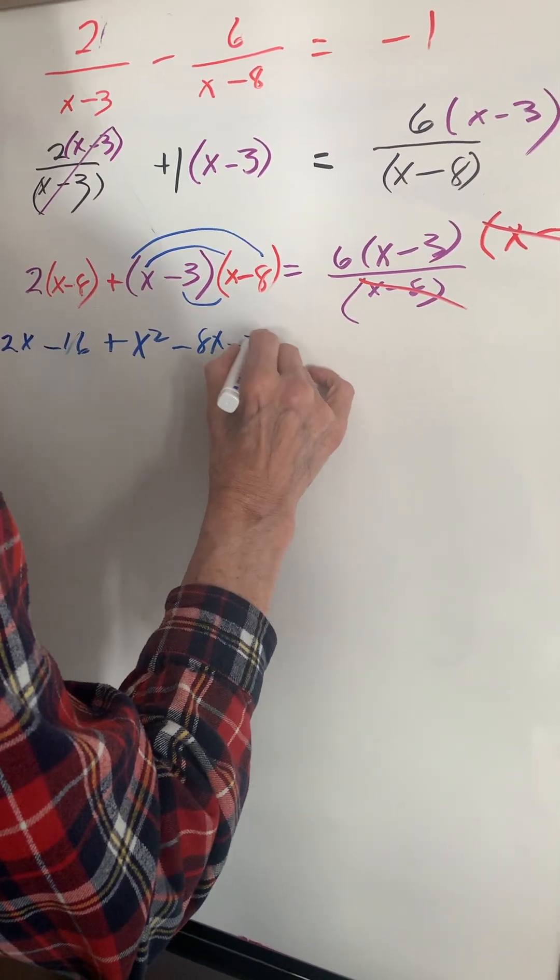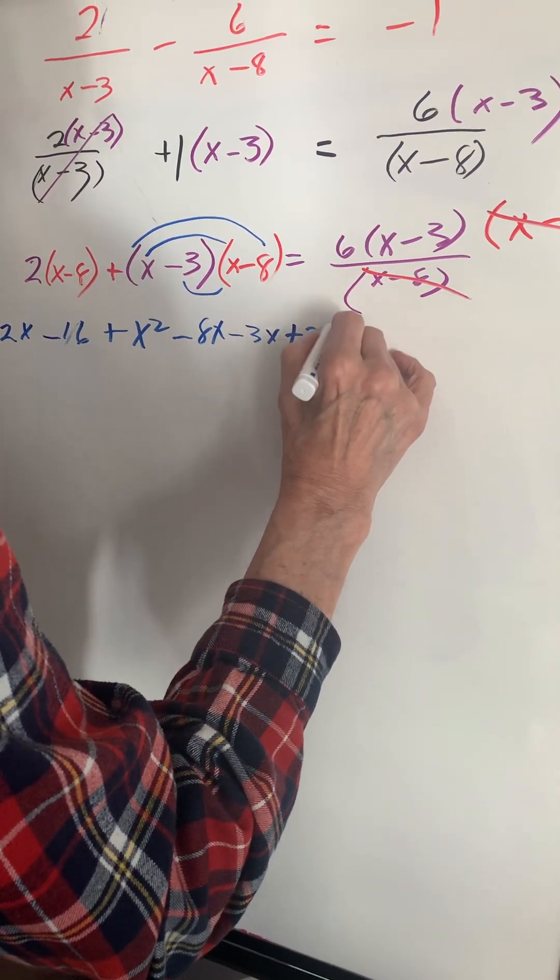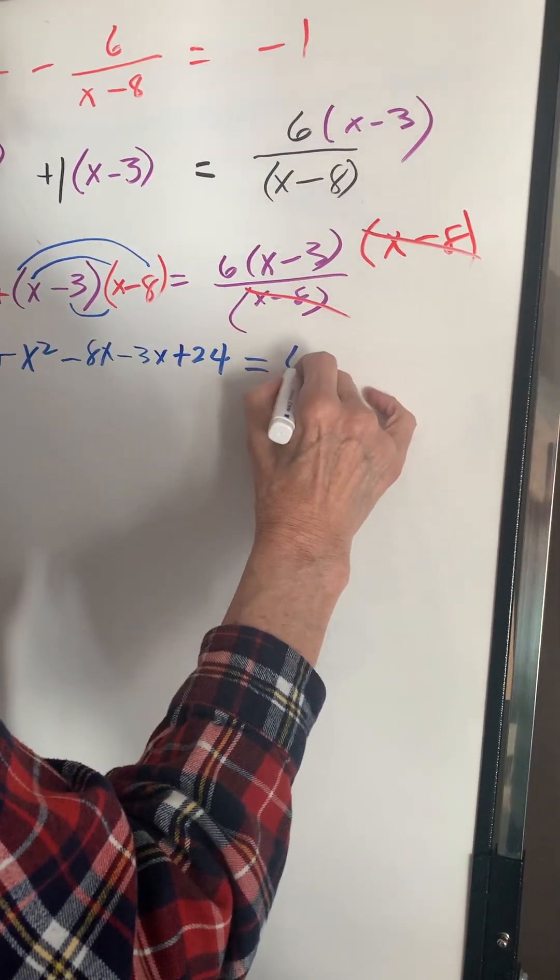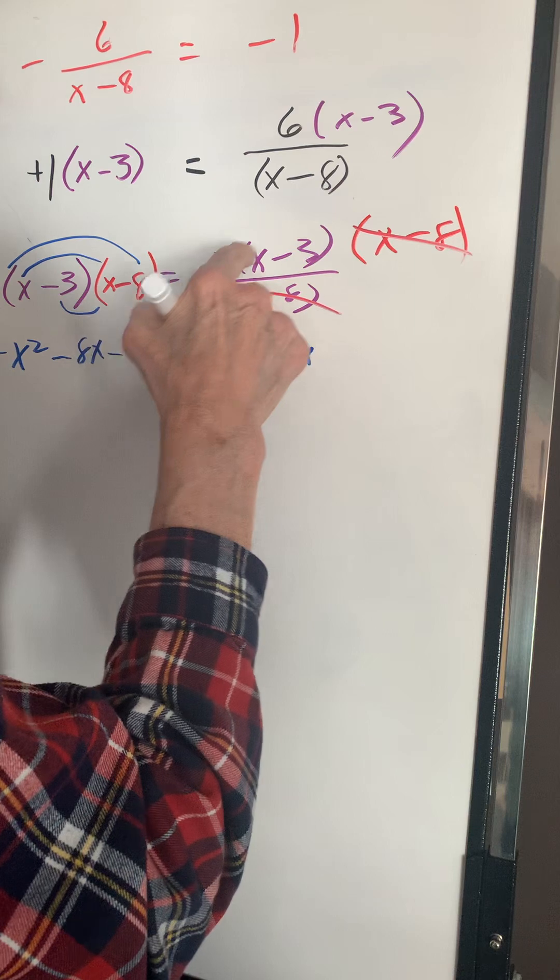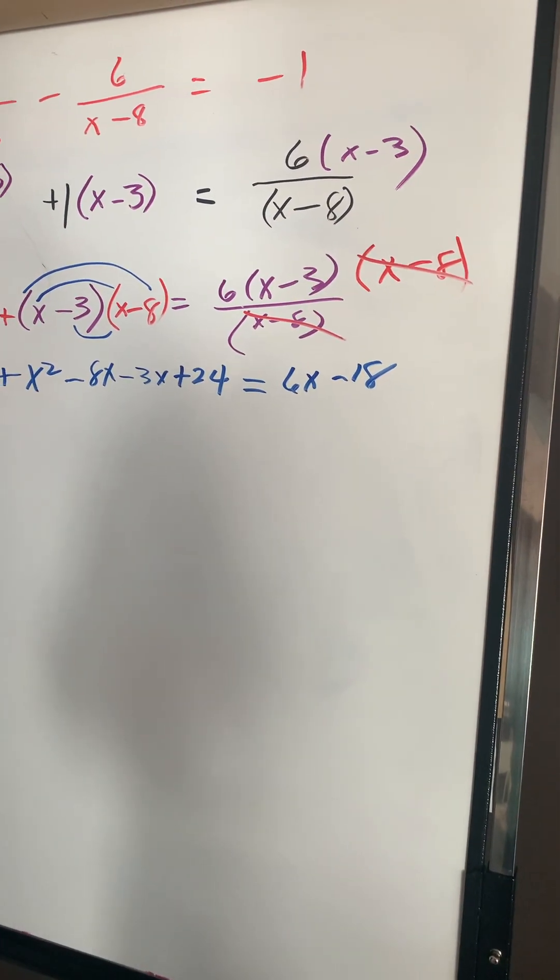Equals 6x, and 6 times 3 is 18. Now we have all this information. Let's transpose everything to the left-hand side equals zero.